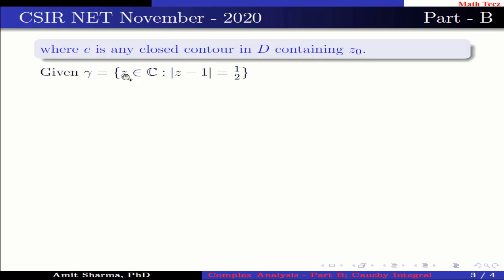Given gamma is z belongs to C such that mod of z minus 1 equal to 1 by 2, which is equal to z belongs to C such that (x minus 1) all square plus y square equal to 1 by 4, which implies gamma is a circle having center (1, 0) and radius is 1 by 2.